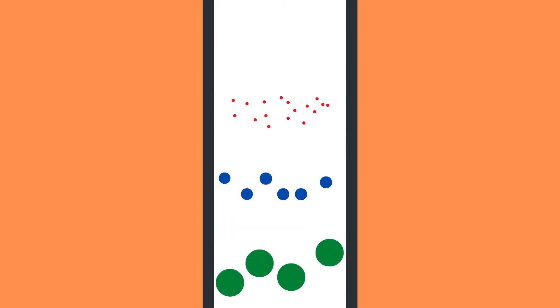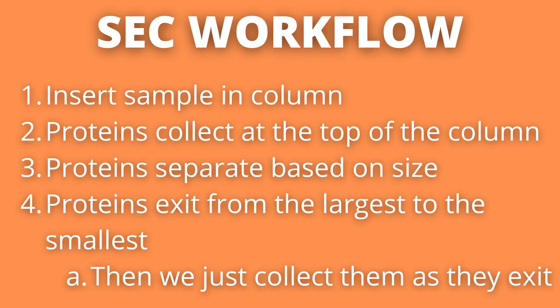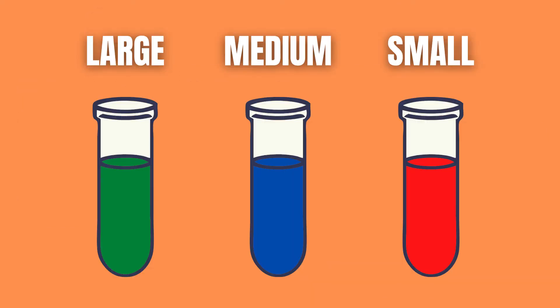Fourth and finally, the largest protein will exit first, followed by the second largest and so on. Then as they exit, it is simply a matter of collecting each protein as they exit the column.